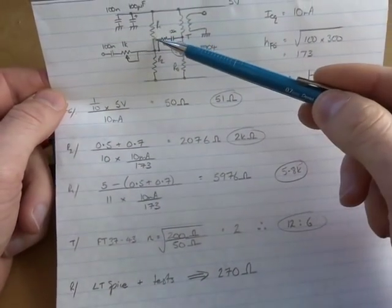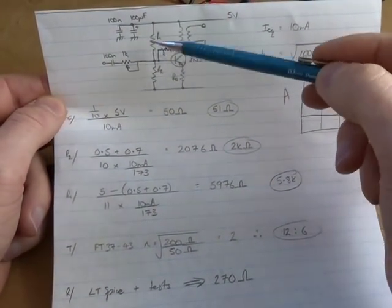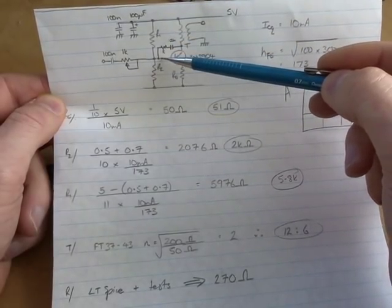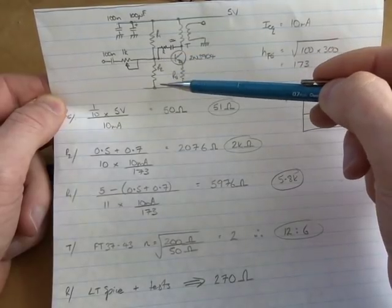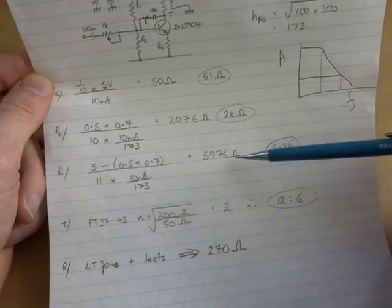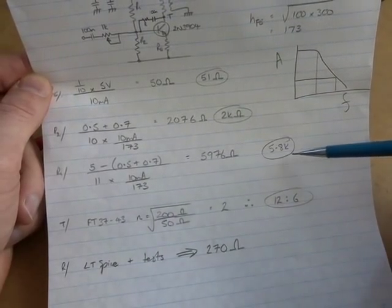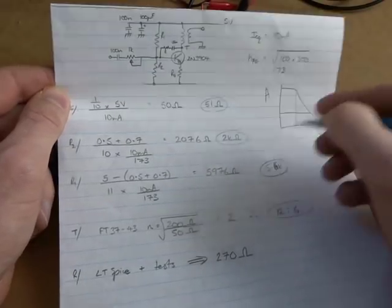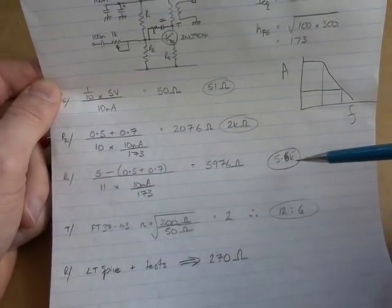R1, the top resistor in that voltage divider biasing there, so it's now going to be 5 volts, minus the voltage there, divided by 11 times the base current now. And that comes out to be 5976, so we'll use a 5.8, which doesn't exist, it's actually used a 5.6, 5.6K ohm resistor.